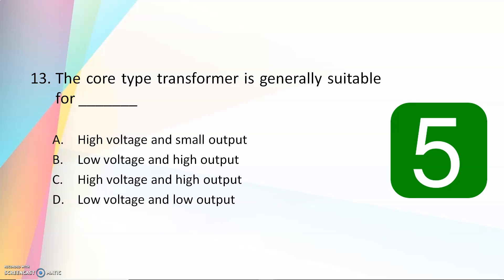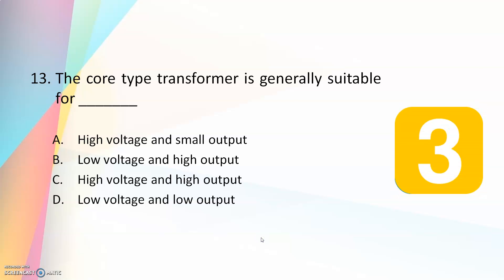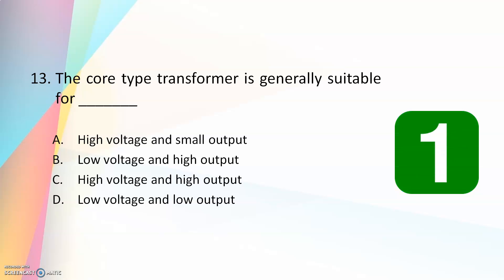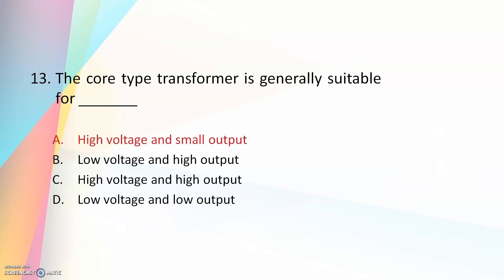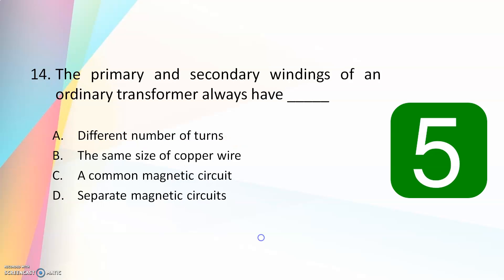Thirteenth question: the core type transformer is generally suitable for — high voltage and small output, low voltage and high output, high voltage and high output, or low voltage and low output. The answer is high voltage and small output. The core type transformer is used for high voltage and small output applications.